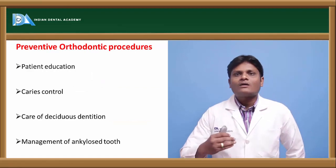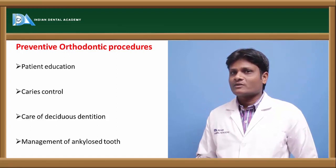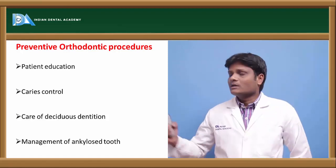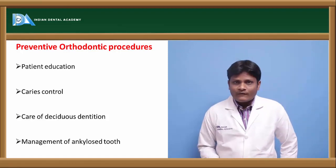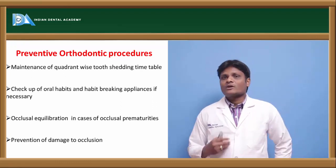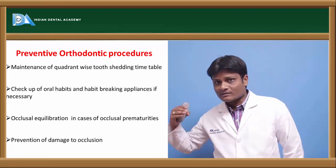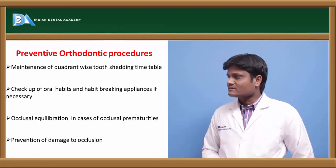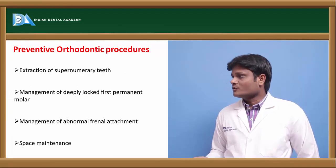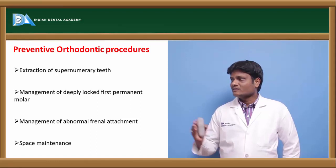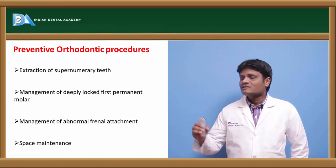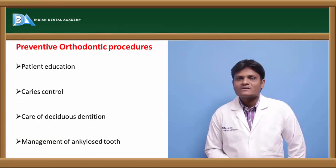Preventive orthodontics includes: patient and parent education, caries control, care of deciduous dentition, management of ankylosed teeth, maintenance of quadrant-wise tooth shedding timetable, checking for and intercepting abnormal oral habits using appliances where necessary, occlusal equilibration to eliminate occlusal prematurities, prevention of damage to the occlusion, extraction of supernumerary teeth, management of deeply locked first permanent molars, management of abnormal frenal attachment, and space maintenance.